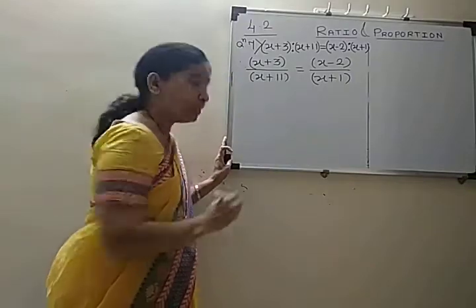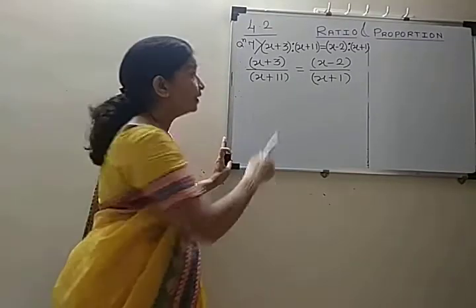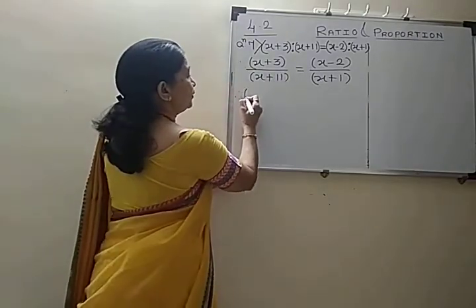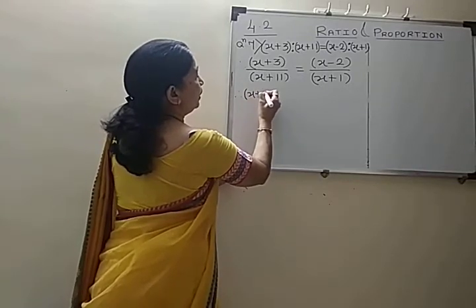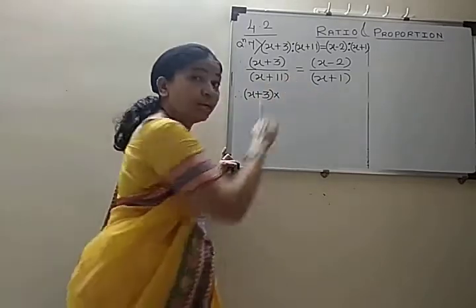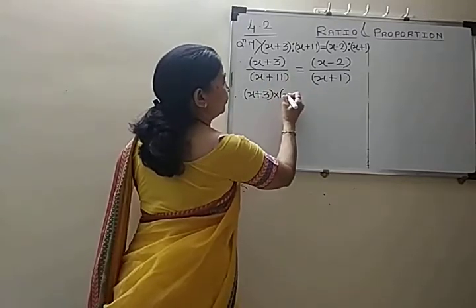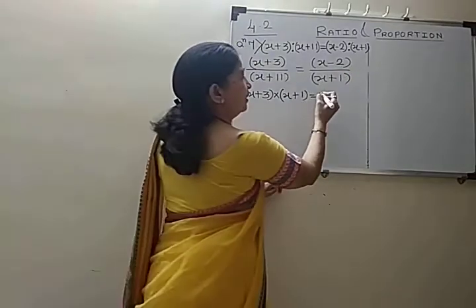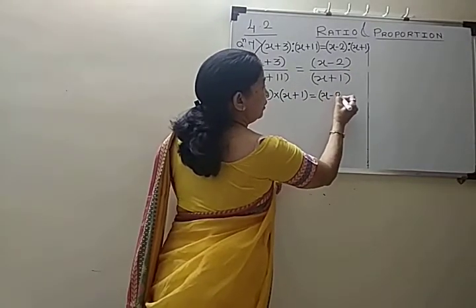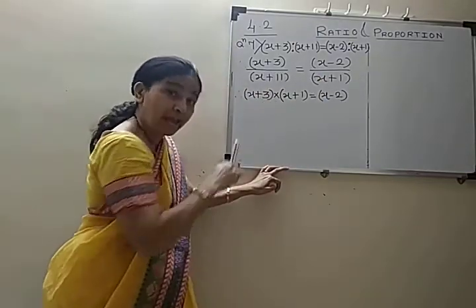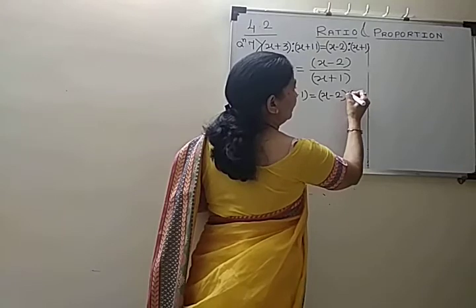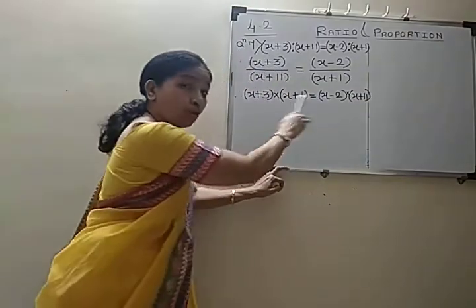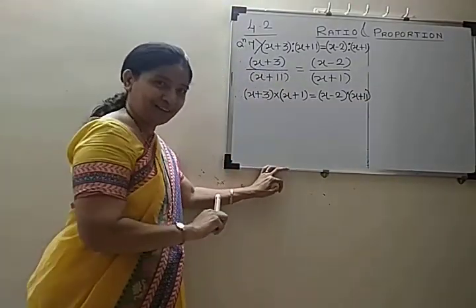Now what we will do is take cross multiplication. That means x plus 3 multiplied by x plus 1 is equal to x minus 2 multiplied by x plus 11. Thus, we took cross multiplication.